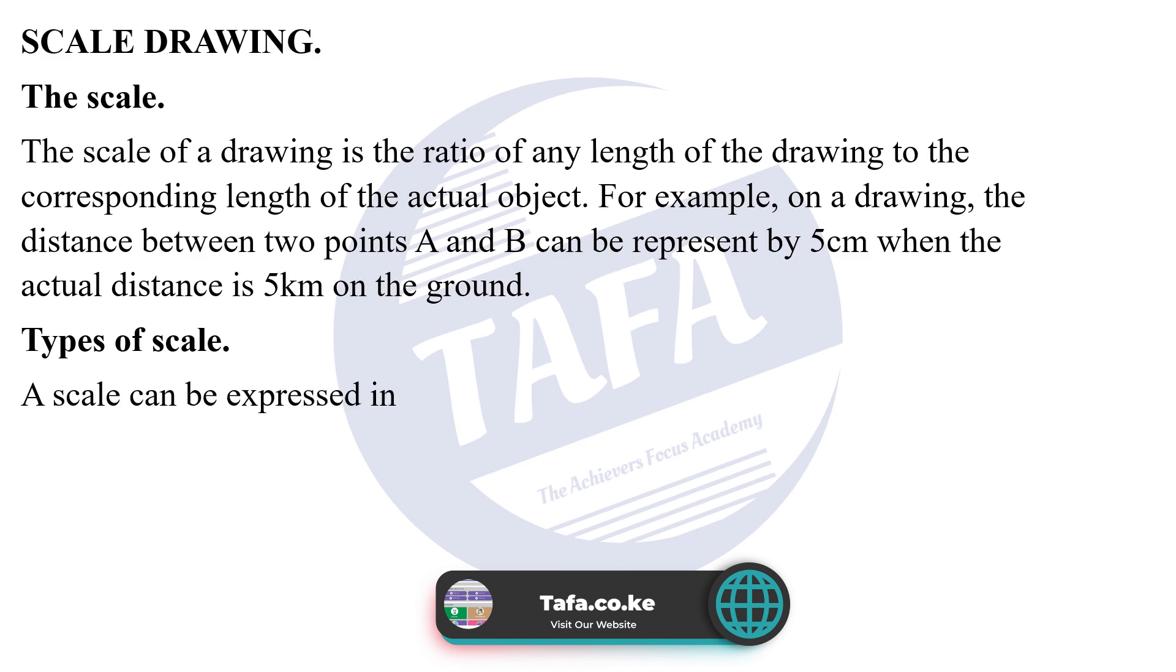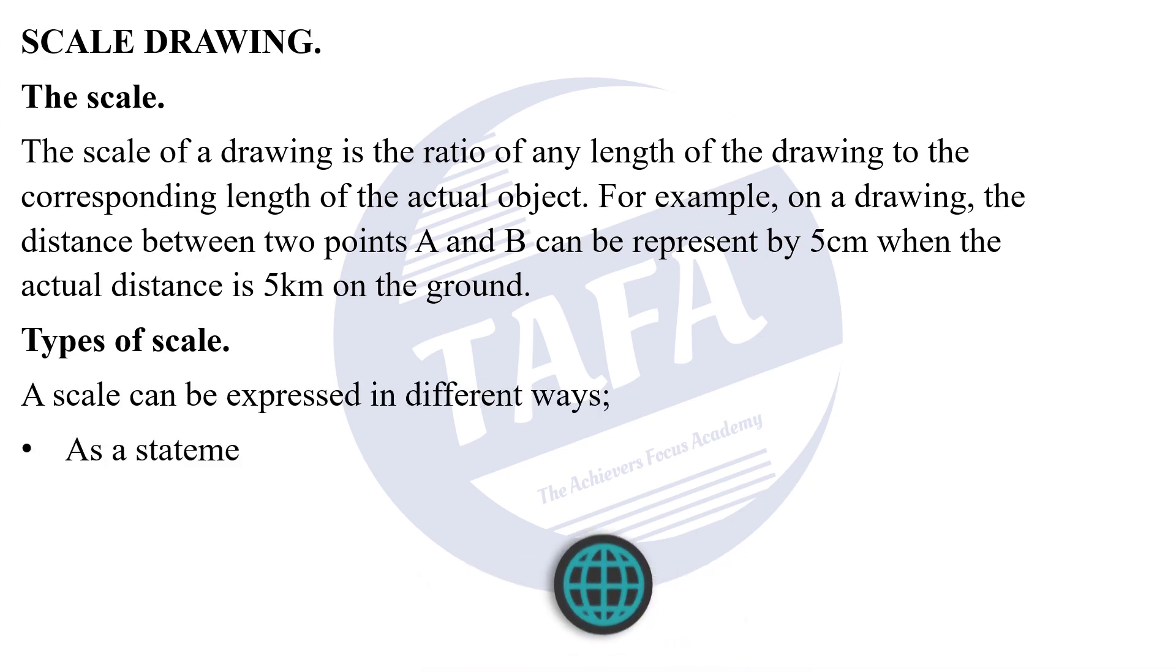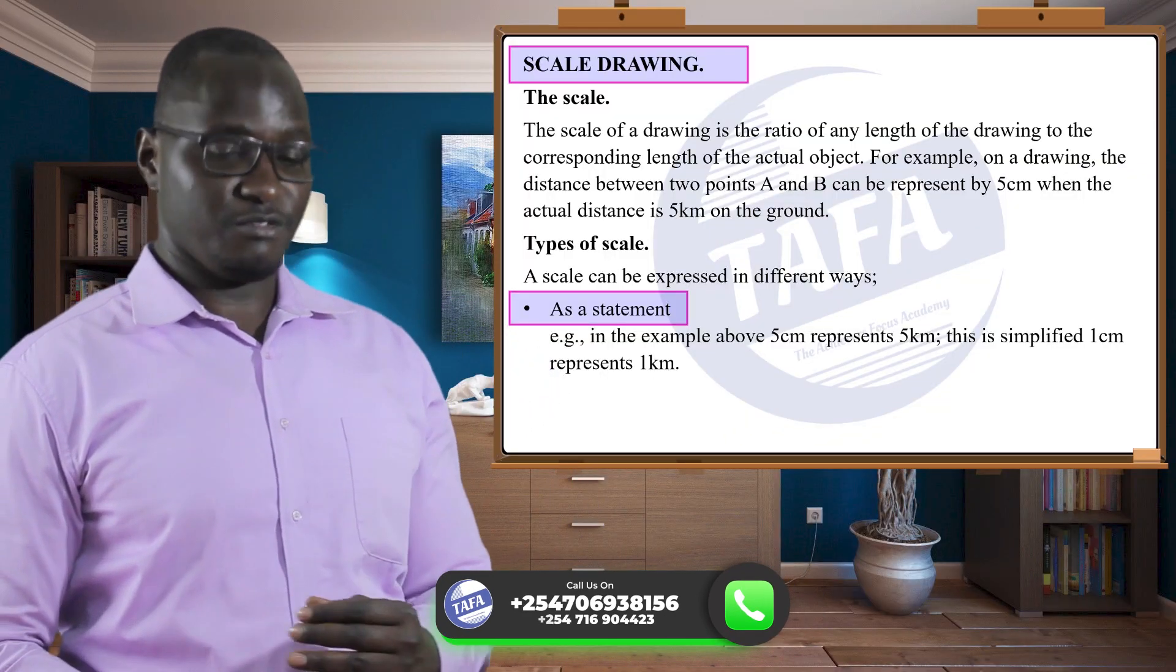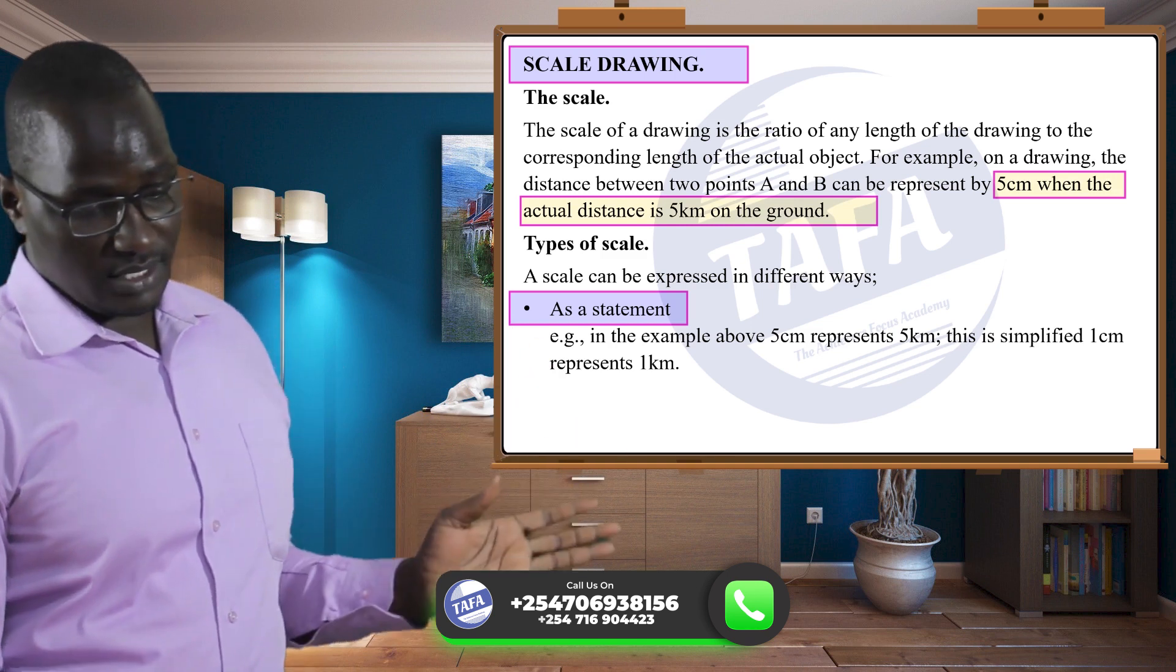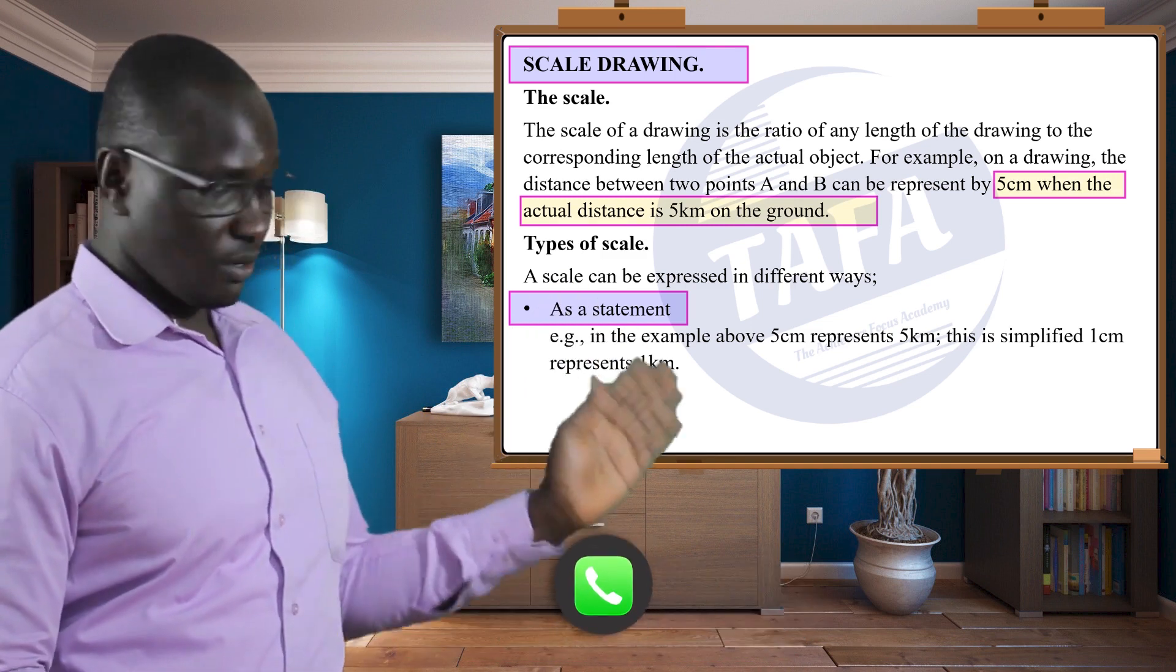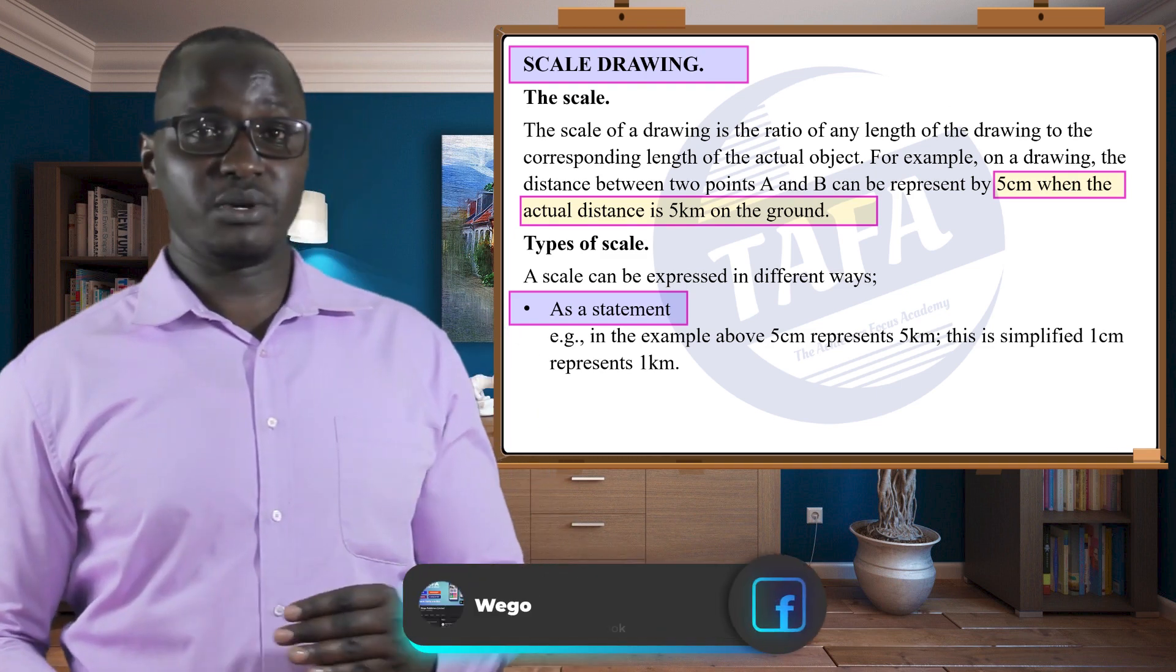The first one is as a statement. In the example that you've seen above, we say five centimeters represent five kilometers on the ground. That means we can simplify it to one centimeter representing one kilometer.